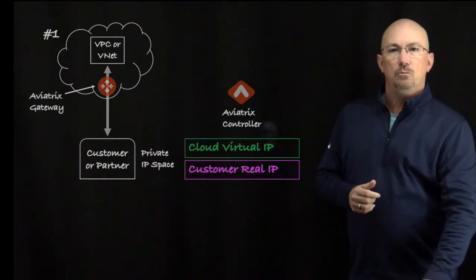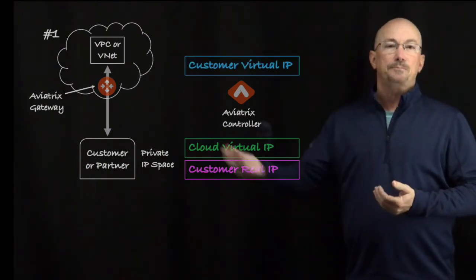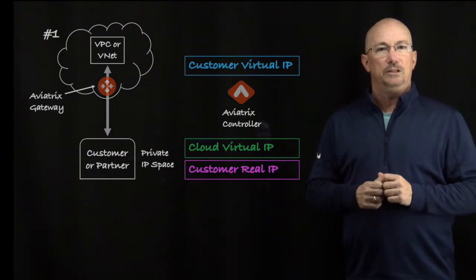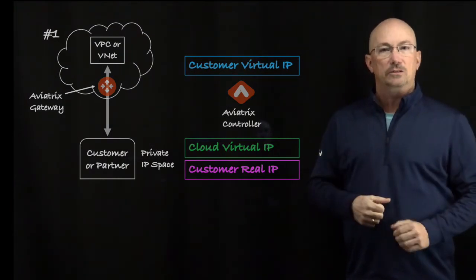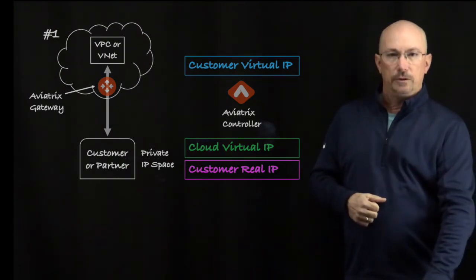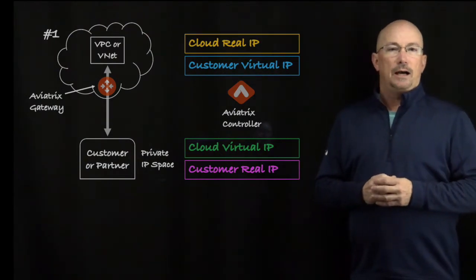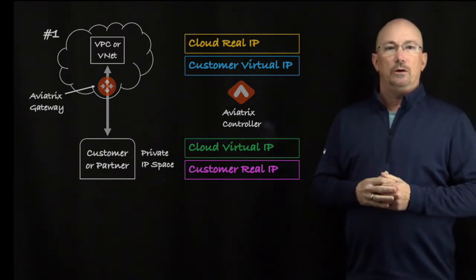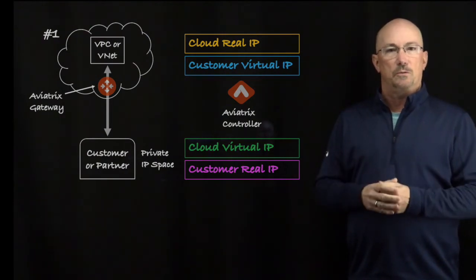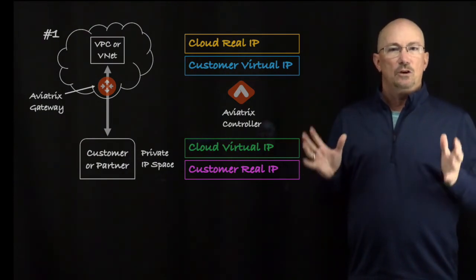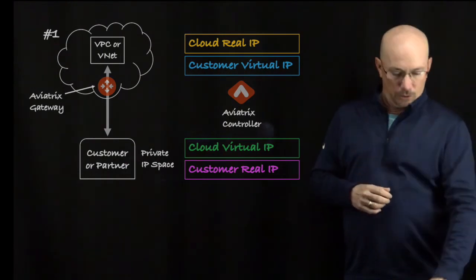Then there are two more things. One is the customer virtual IP — this is the IP address you use from the cloud to talk back to the customer. And there's the actual cloud application IP, the real IP address that your service is providing in the cloud. So you enter these four IP addresses and you're ready to go.